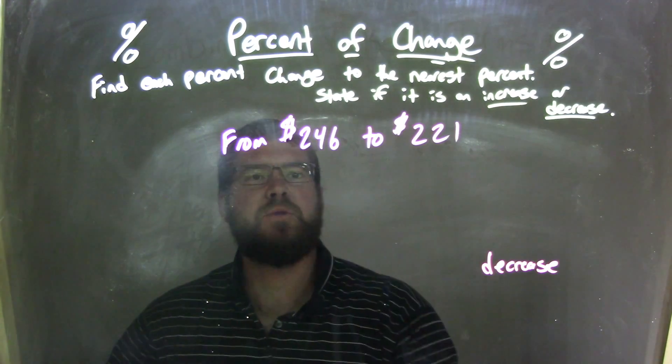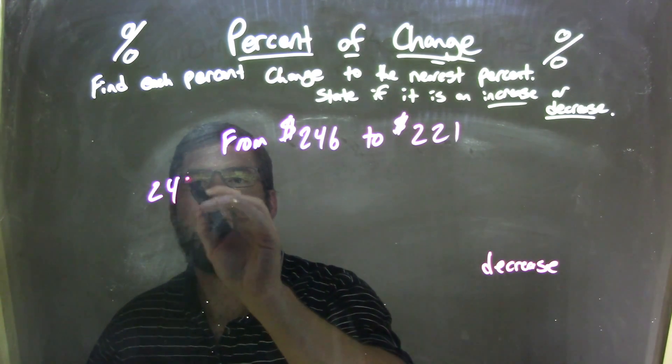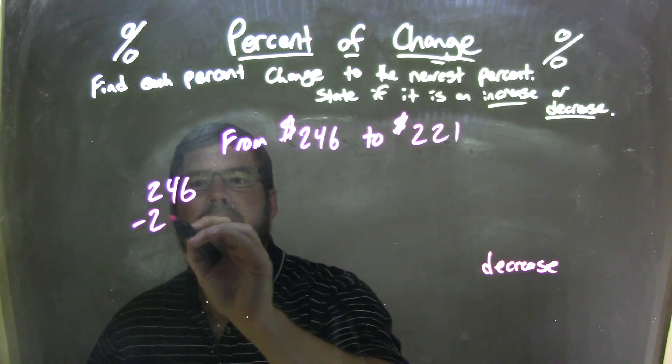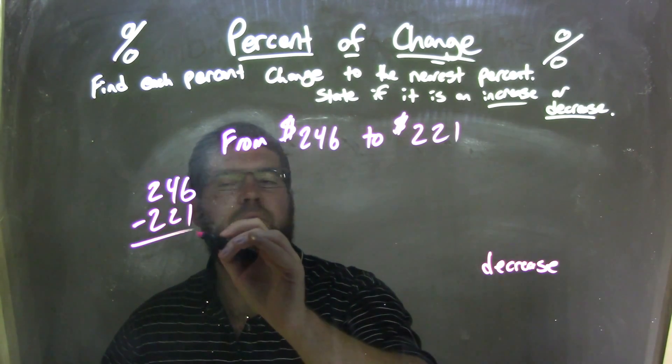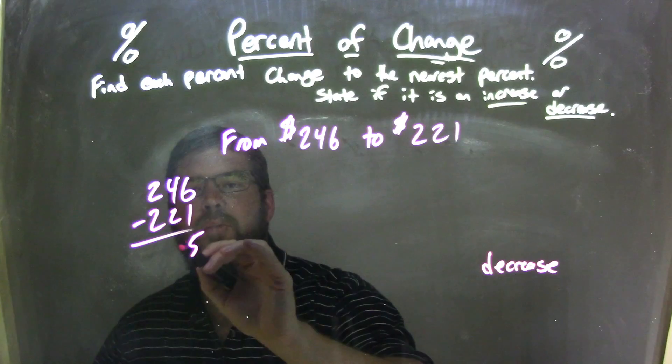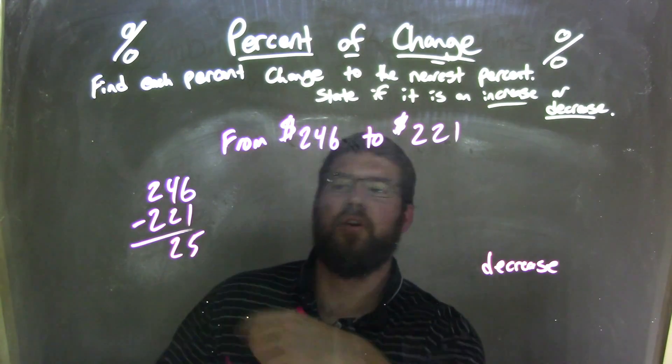Now we need to find the difference between those two numbers. $246 subtract $221. 6 minus 1 is 5, 4 minus 2 is 2, and 2 minus 2 is 0. So we have 25.